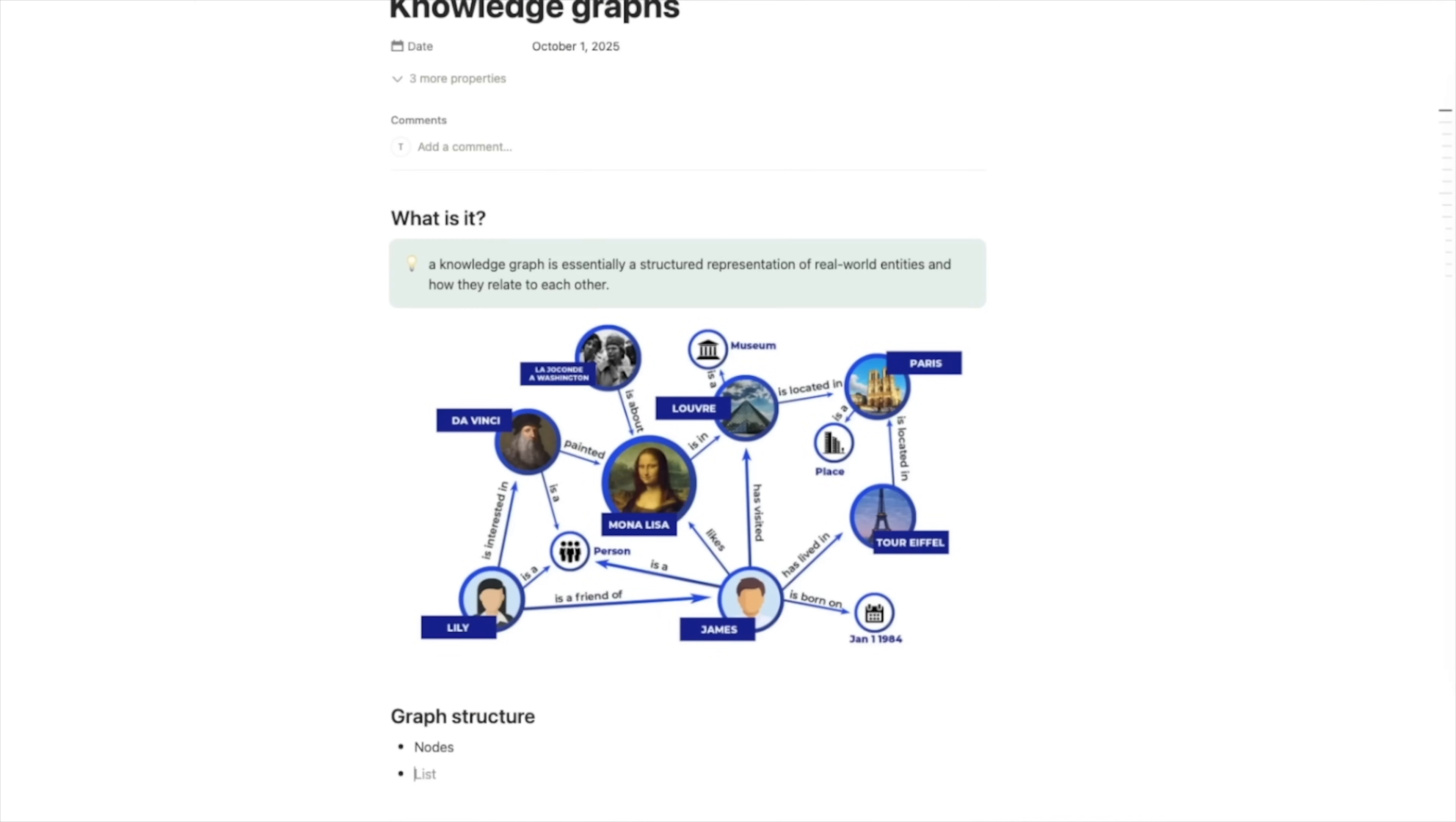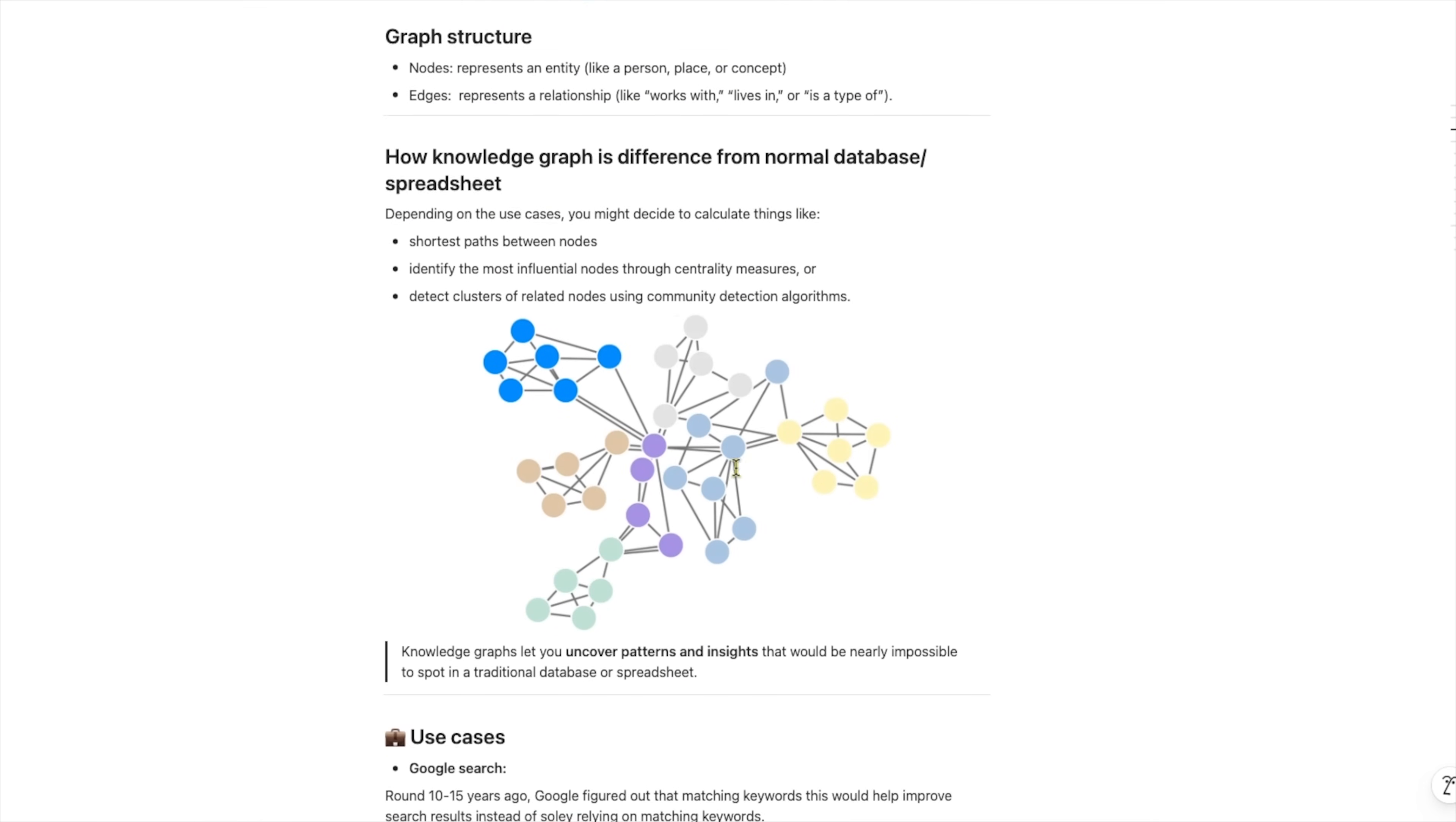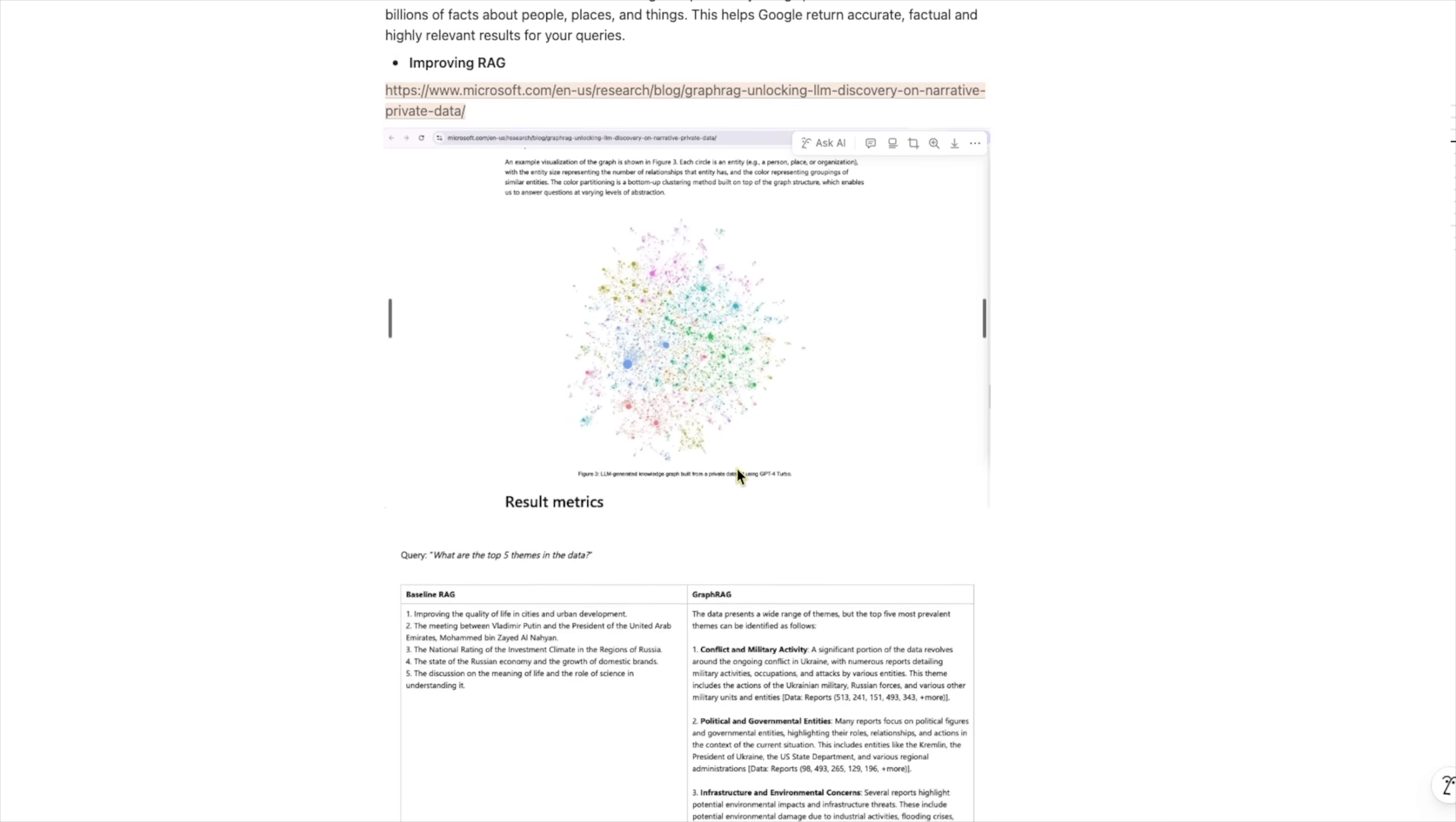While I first learn about something, I don't worry about making notes pretty. I just dump everything I come across into Notion with some bullet points and rough explanations in plain English, some screenshots, code snippets, links, and so on. For example, if I'm learning about knowledge graphs, my notes in Notion will look raw and a bit chaotic like this at this stage. And that's okay. The goal is just to capture things before they slip away.